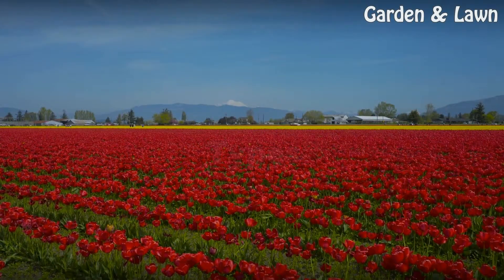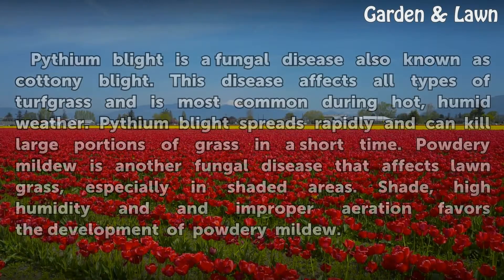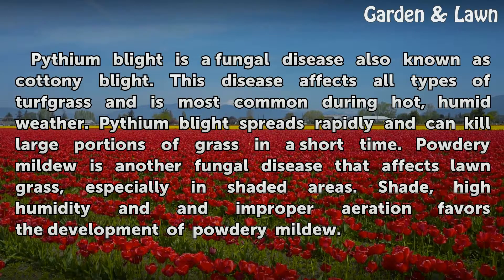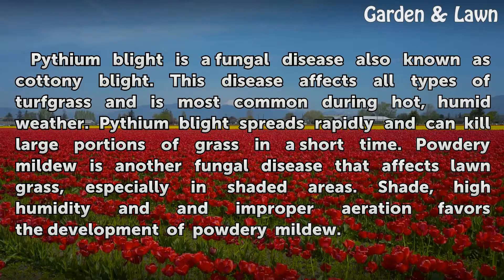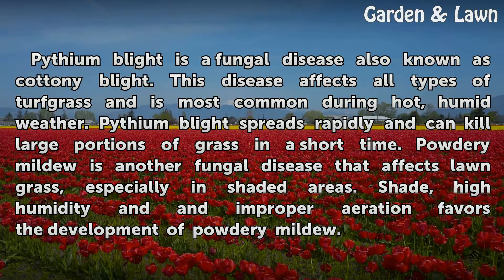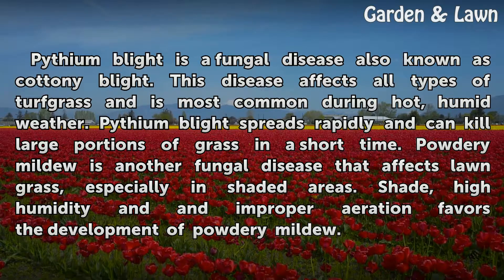Types: Pythium blight is a fungal disease also known as cottony blight. This disease affects all types of turf grass and is most common during hot, humid weather. Pythium blight spreads rapidly and can kill large portions of grass in a short time.